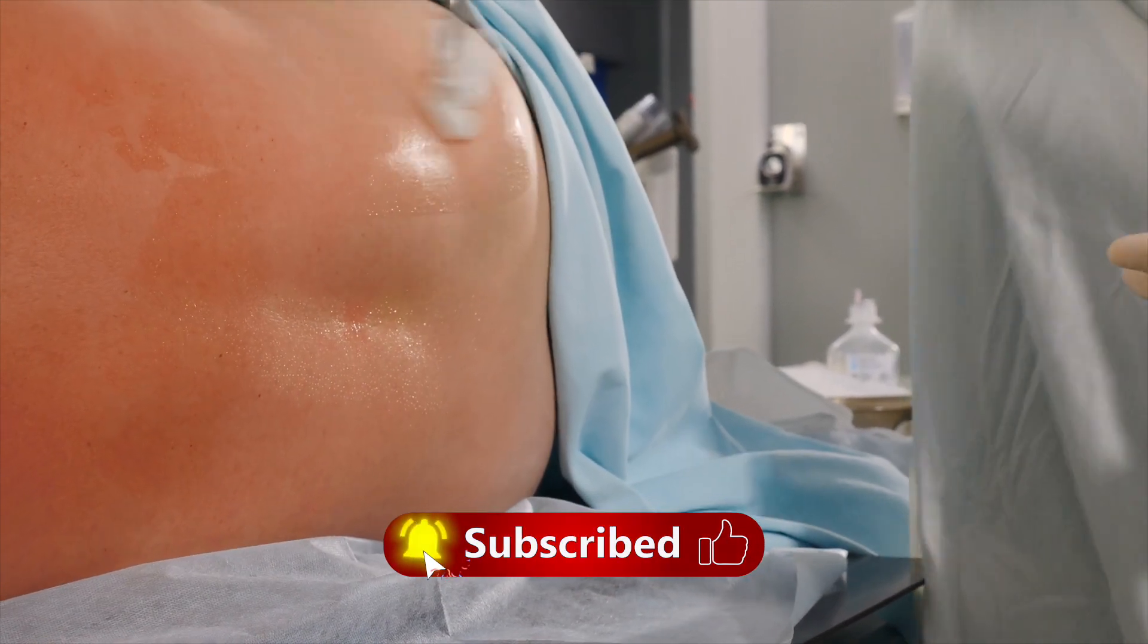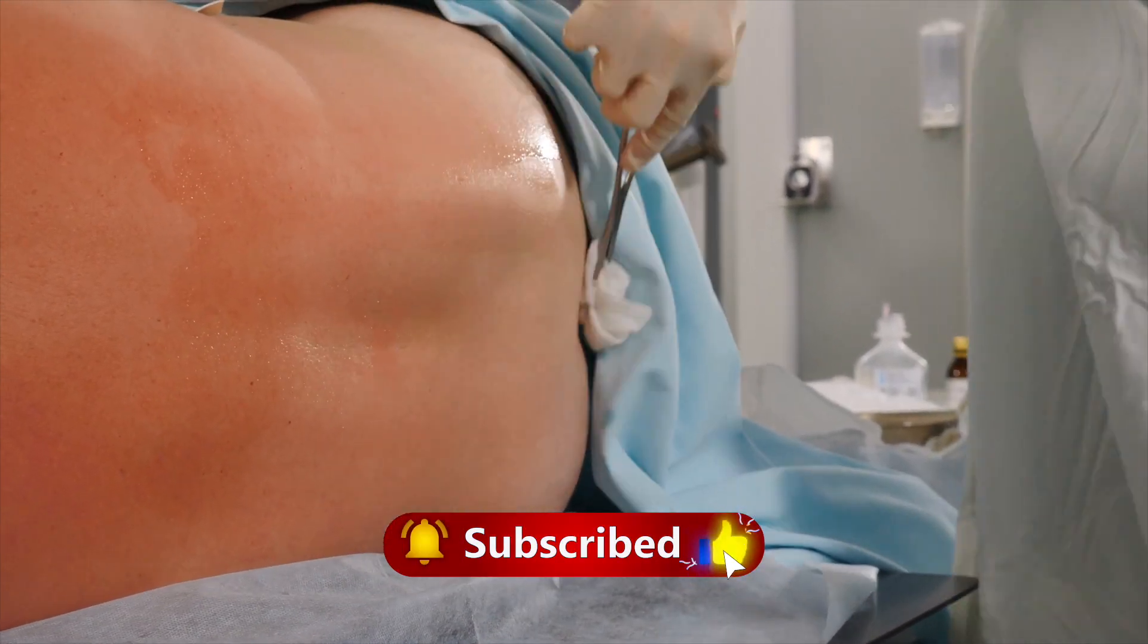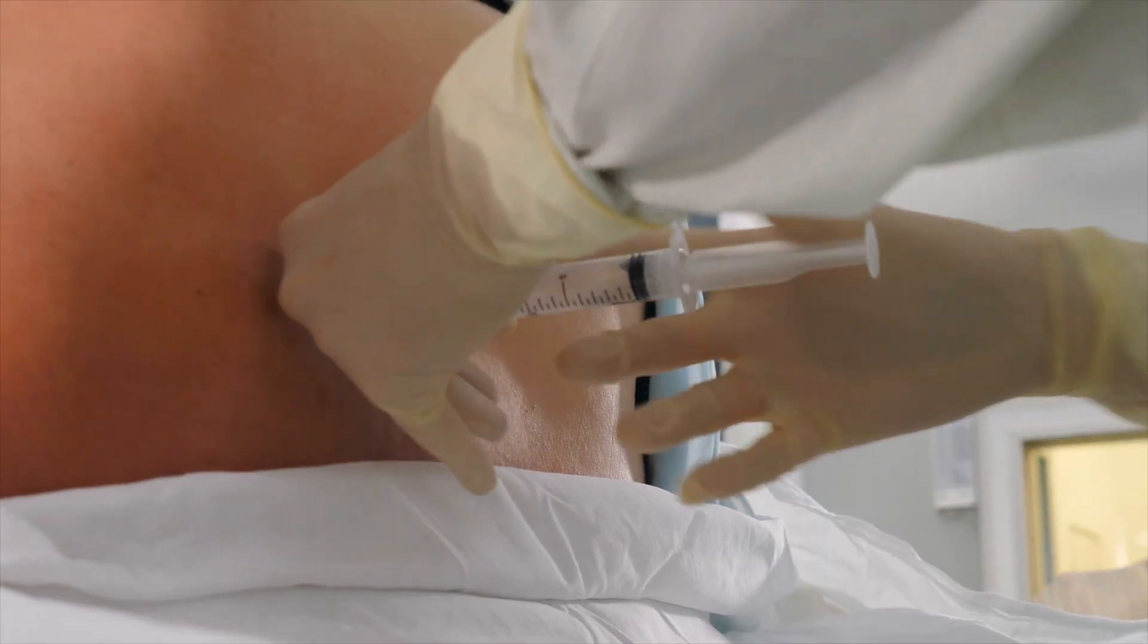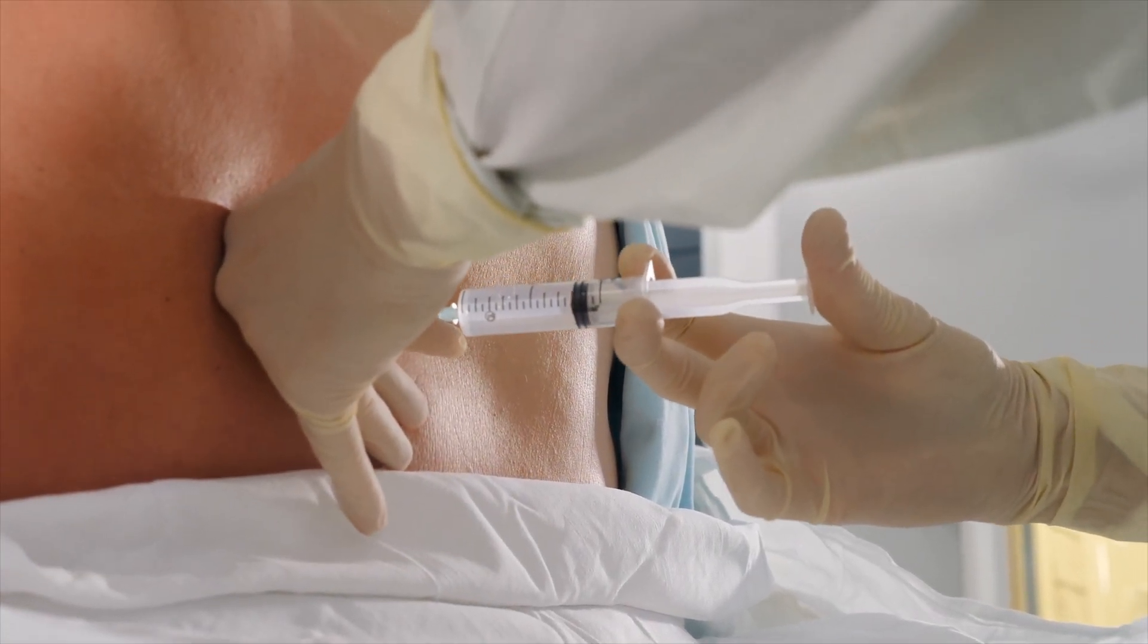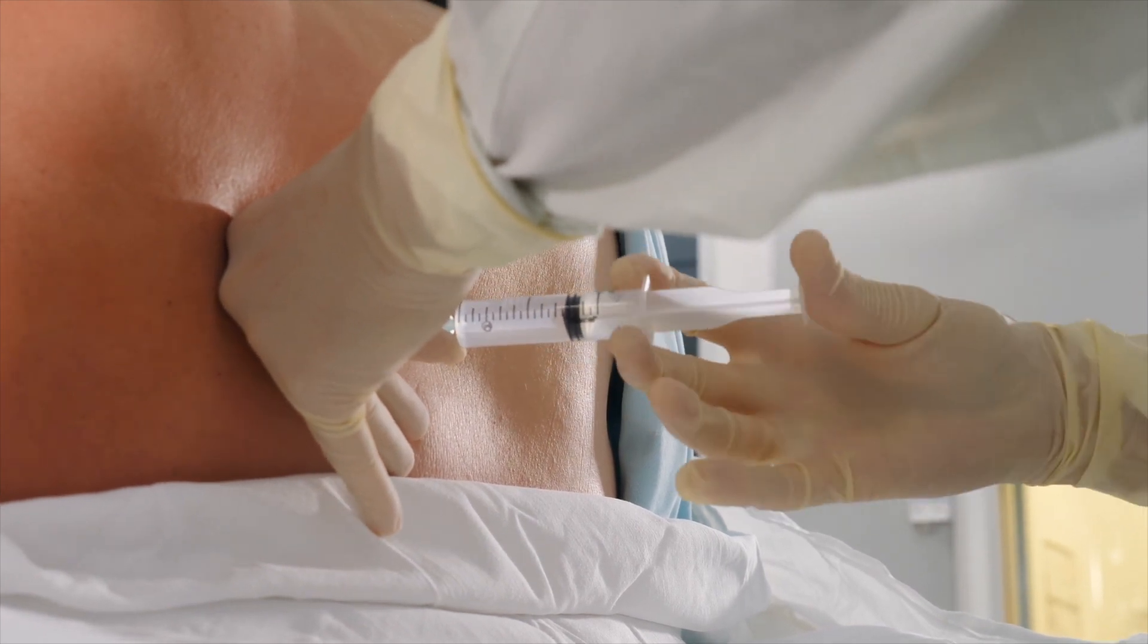Epidural anesthesia works a bit differently. Instead of a single injection, a small flexible tube called a catheter is placed into the epidural space just outside the spinal cord.